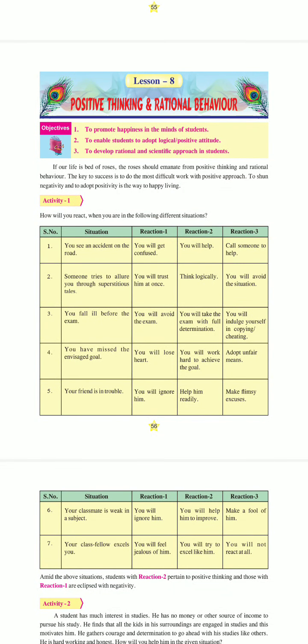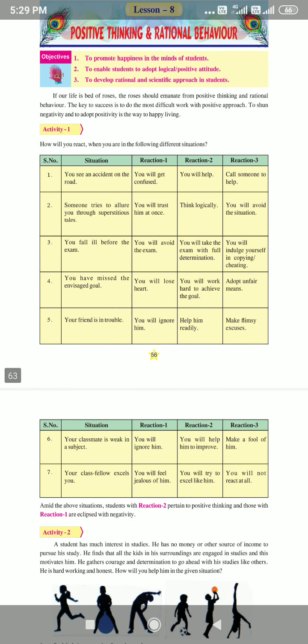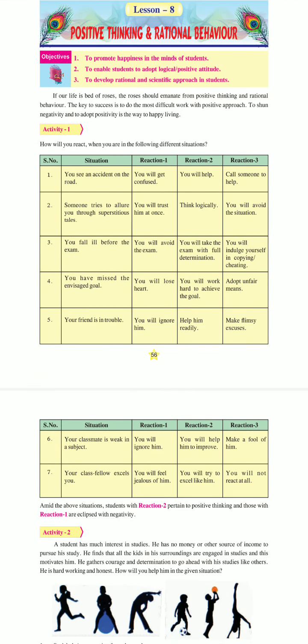Dear students, let us cover lesson 8 of the Welcome Life today. The name of the chapter is Positive Thinking and Rational Behavior. Positive thinking is progressive thinking, where we see the bigger picture and don't bring negative thoughts. Rational behavior is logical behavior, which means that you can take better decisions.